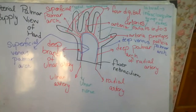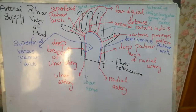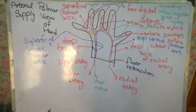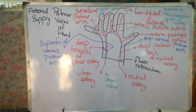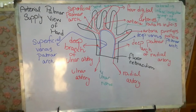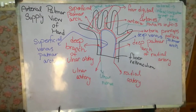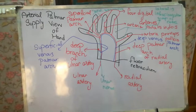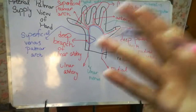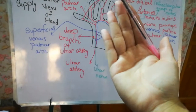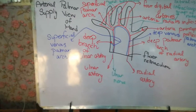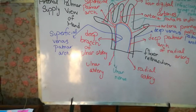This video is about the arterial, venous, and lymphatic drainage of the palm of the hand. Before going into detail, students should know what the palm is. The palm is basically the anterior side of the hand — this anterior side is known as the palm, and the posterior side is known as the dorsum of the hand.